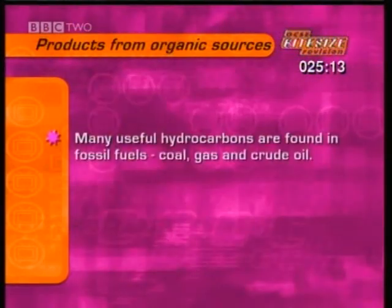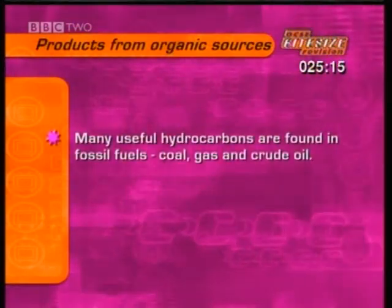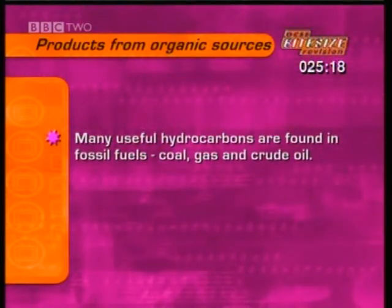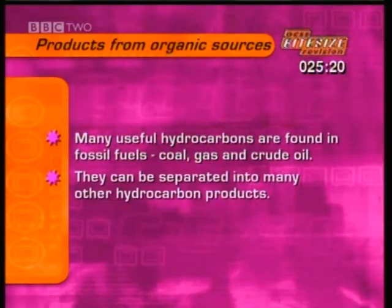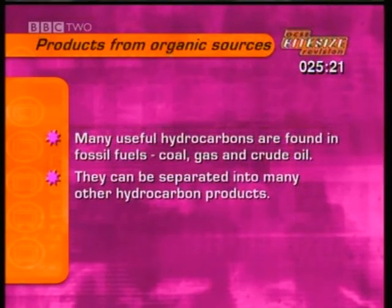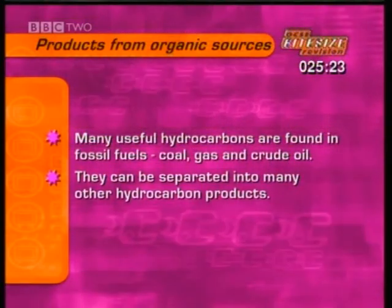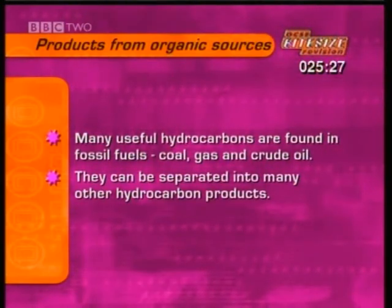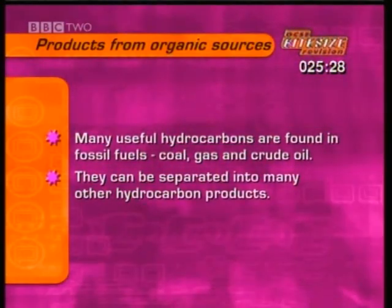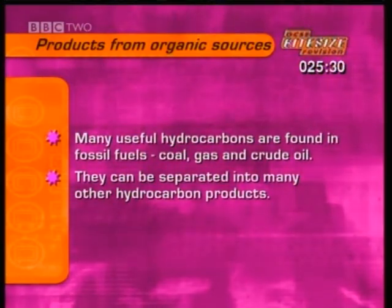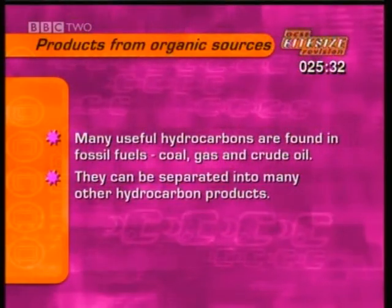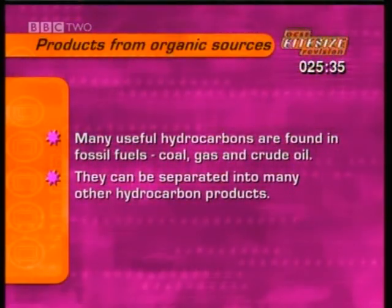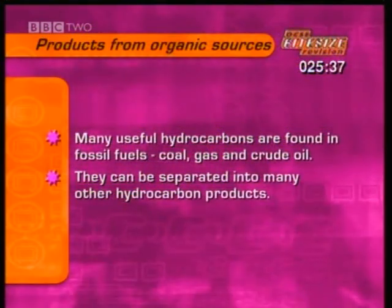Some of the most useful hydrocarbons can be found in fossil fuels, like coal, gas, or oil, from under the ground. It's a hugely important industrial process to separate crude oil into the many useful different hydrocarbon products it contains. As you watch the next clip, note down some of the different hydrocarbons found in crude oil, and the processes used to separate them.